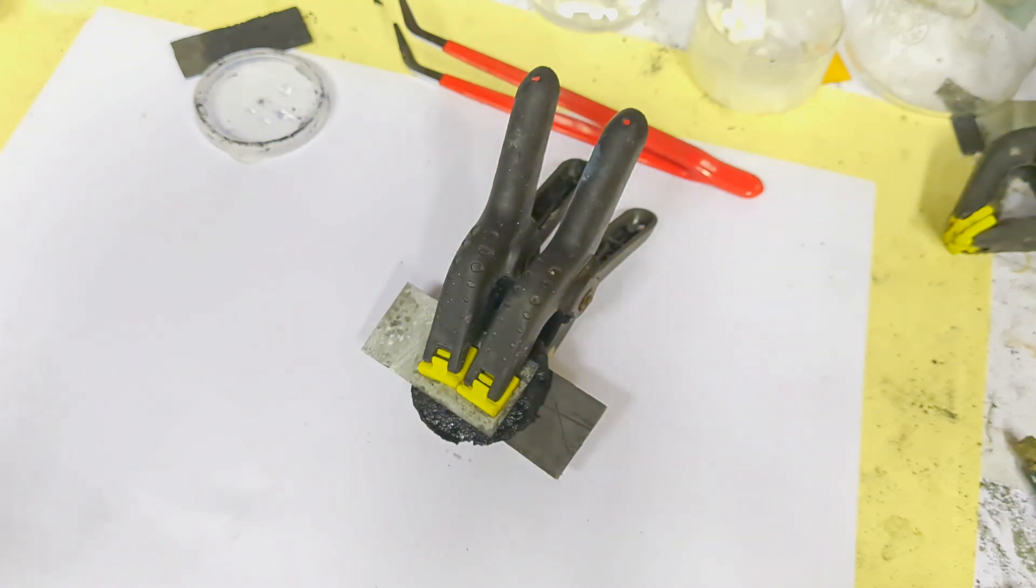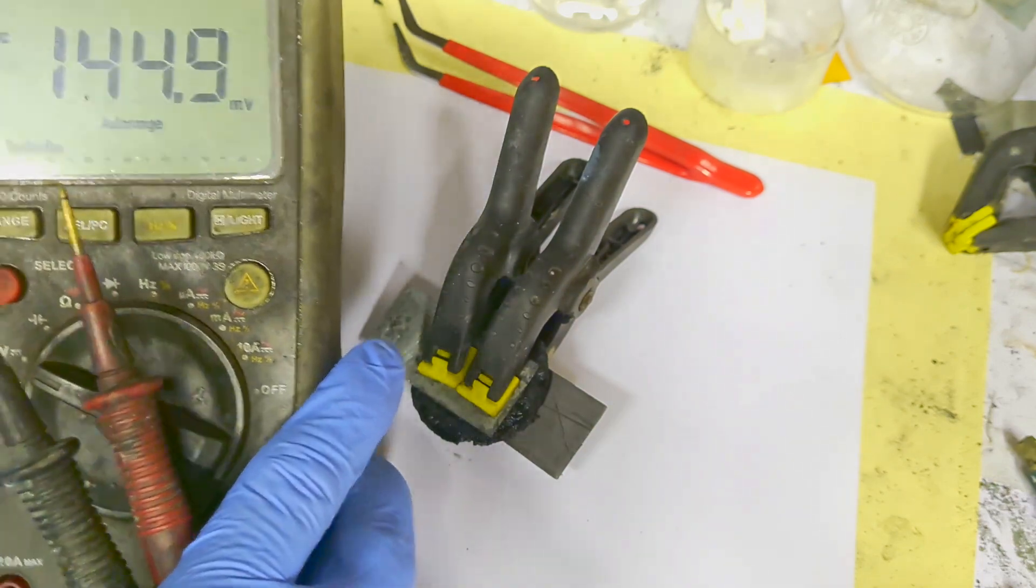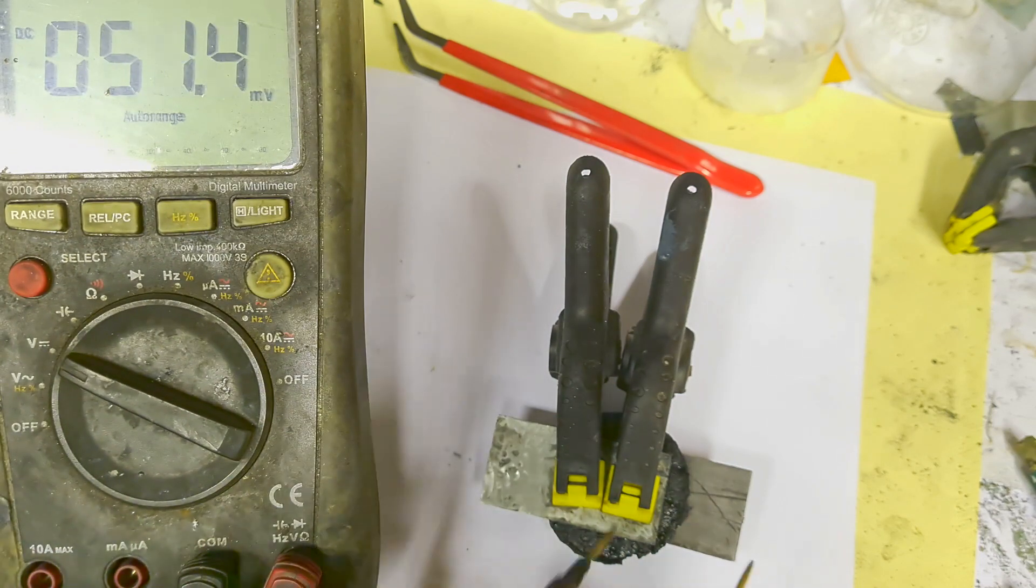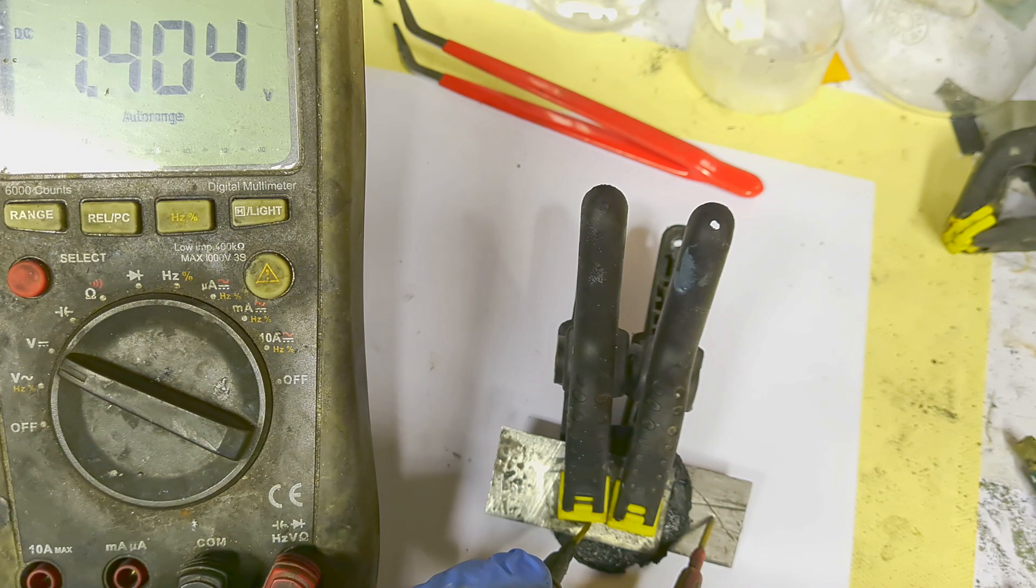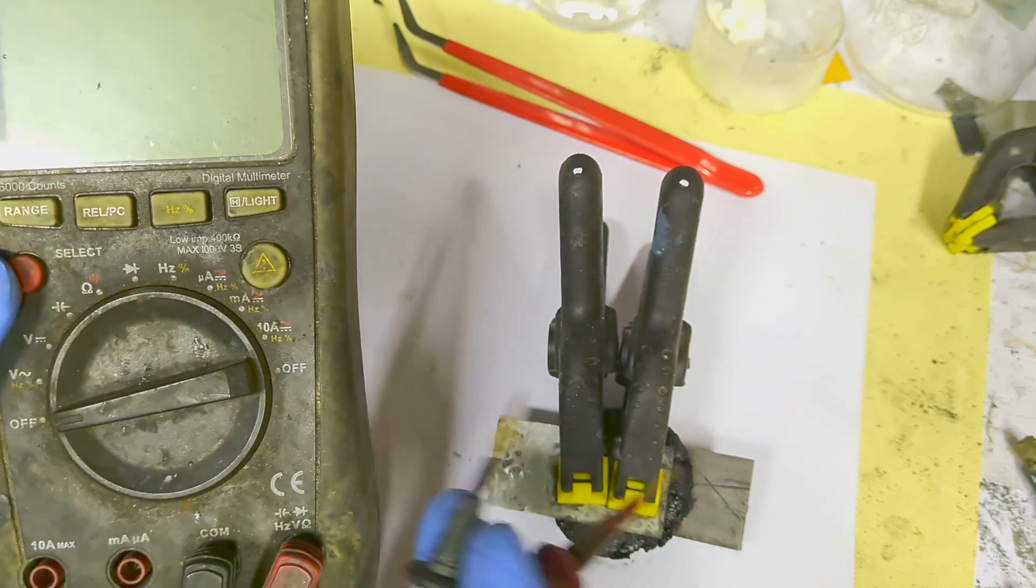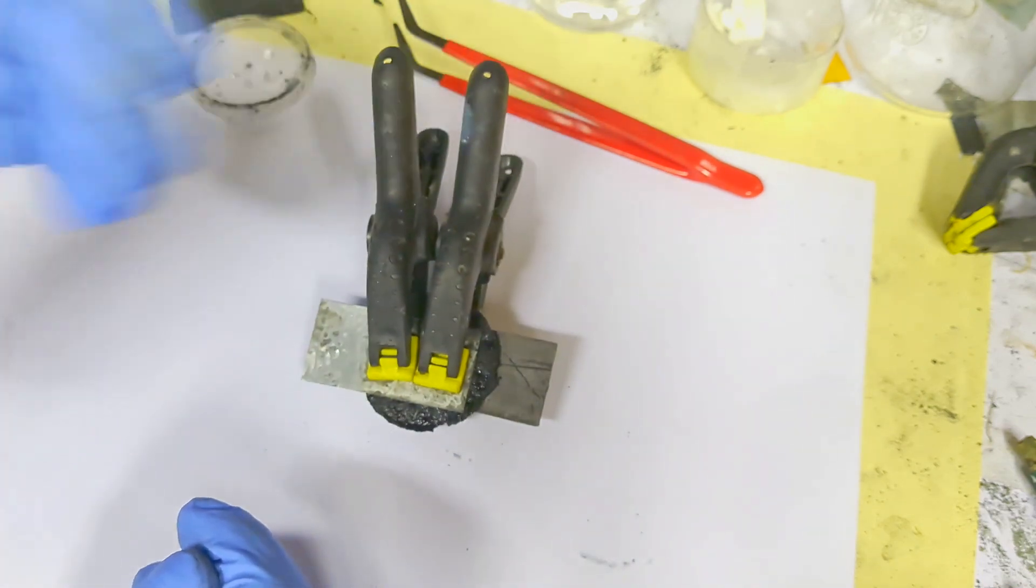Let's check the voltage which is at this moment. And at this moment I get 1.4 volts, but of course I need to charge this cell.